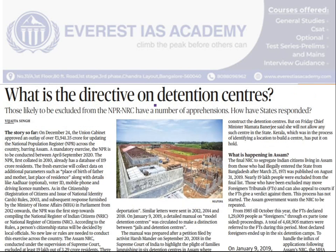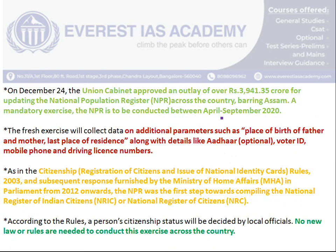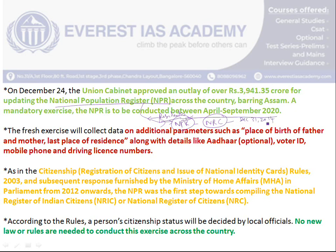The next article asks: what are detention centers? This concept arises due to the NPR registry the government plans to conduct between April and September. The government has said it will not link the NPR with the NRC. The NPR registers usual residents of a country, including foreigners — anyone staying in an area for the last six months who intends to stay for another six months is registered. The NRC, based on a cut-off date of December 31, 2014, under the Citizenship Amendment Act, tries to identify who are citizens and who are illegal migrants.